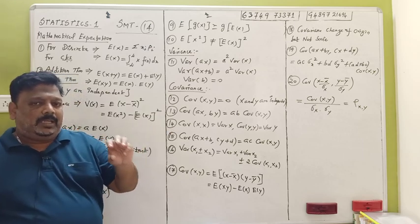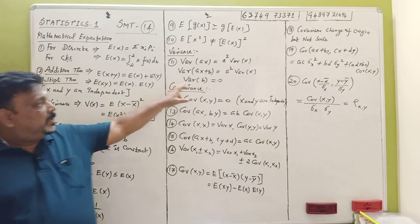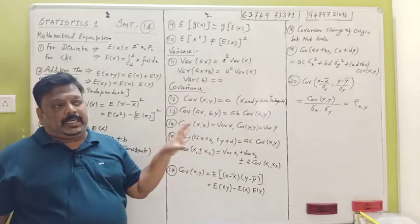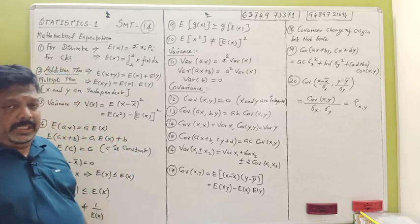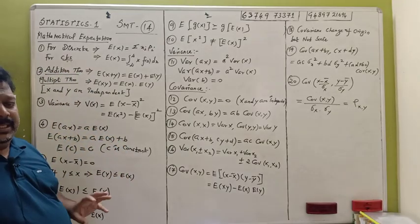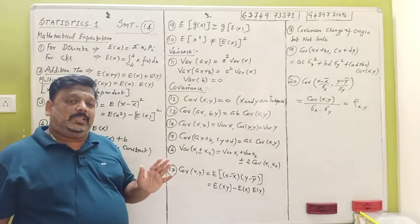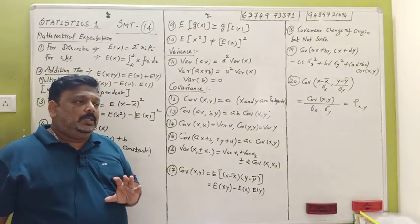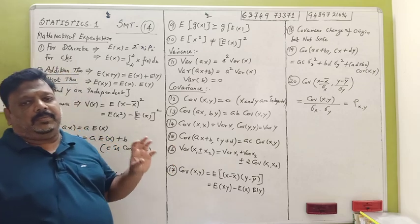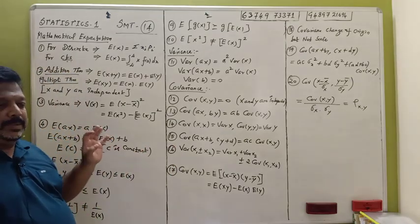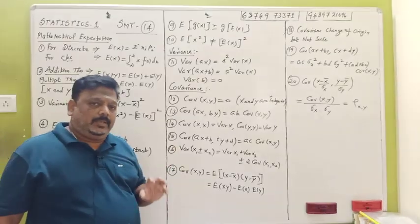The expectation of a constant value c is equal to c — that is, E(c) = c. But the variance of a constant value is 0 — that is, Var(c) = 0. So the expectation of a constant is the constant itself, while the variance of a constant is zero.